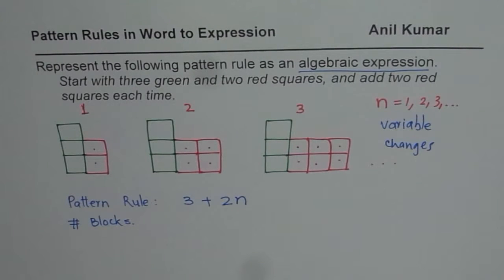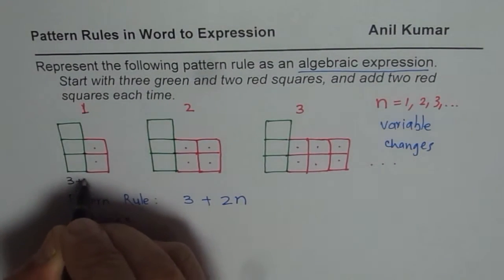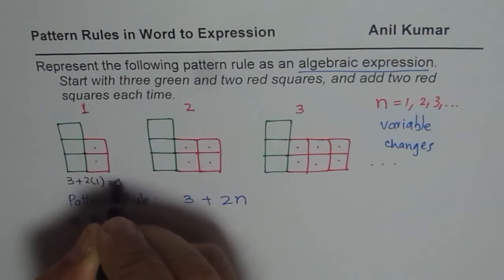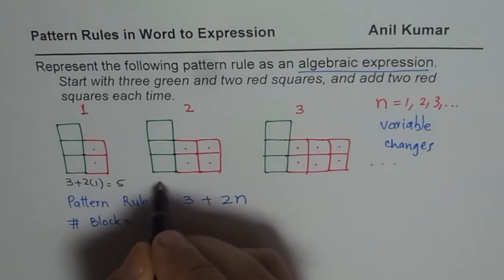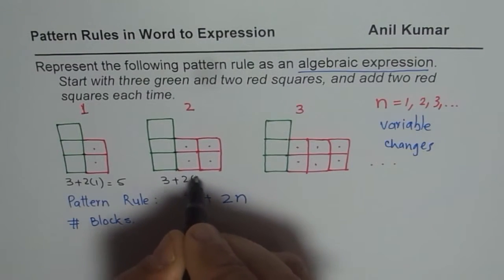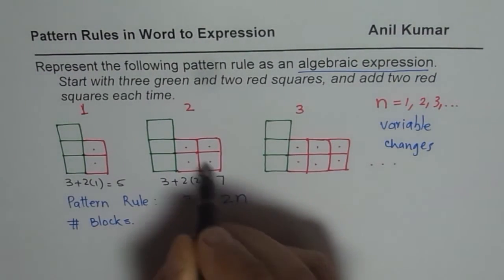For example, in the case of the very first one, if n is 1, I get 3 plus 2 times 1, which is 5: 1, 2, 3, 4, 5. In the second case, it is 3 plus 2 times 2. 2 times 2 is 4, 4 plus 3 is 7, correct? There are 7.